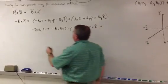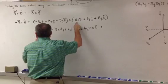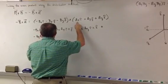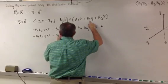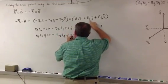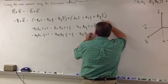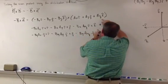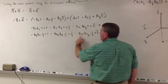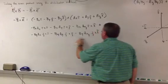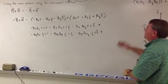Next, negative by times all three: negative by·ax (j cross i), minus by·ay (j cross j), minus by·az (j cross k). Double-checking: j cross i, j cross j, j cross k — negative by, negative by, negative by — ax, ay, az. So far, so good.